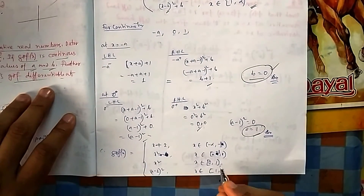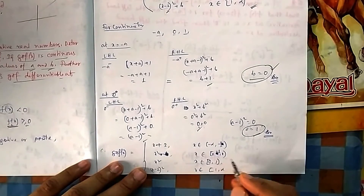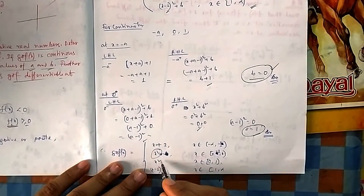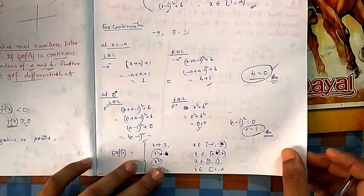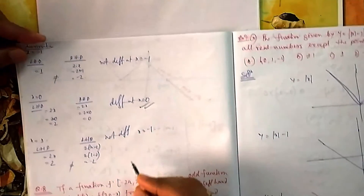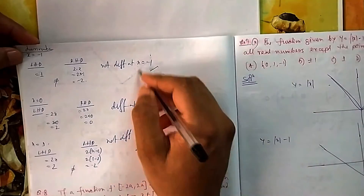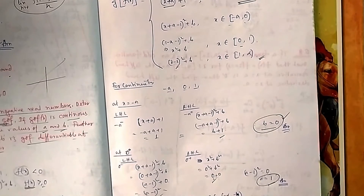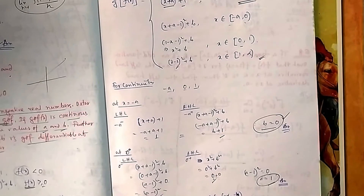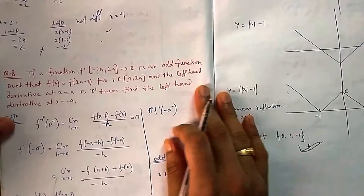Check differentiability of g∘f at x = 0: both left-hand and right-hand derivatives involve x², giving derivative 0 on both sides — so g∘f is differentiable at x = 0. At x = −1 and x = 1, the left-hand and right-hand derivatives differ (e.g., 1 versus 2x evaluated at those points), so g∘f is not differentiable at x = −1 and x = 1.